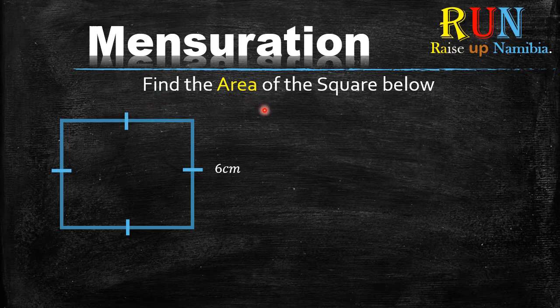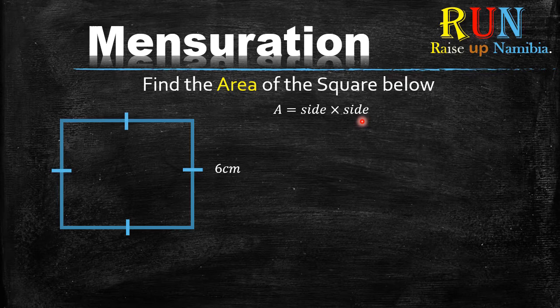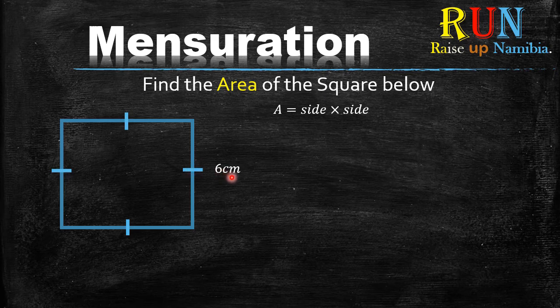How do you find the area of a square? One way is to use the formula: area equals side times side. Looking at our diagram, we are given one piece of information — this side is equal to six centimeters.